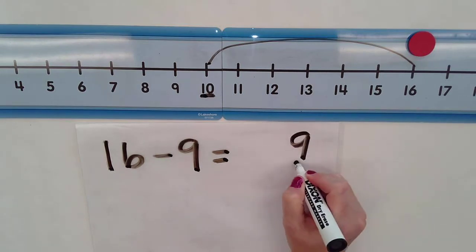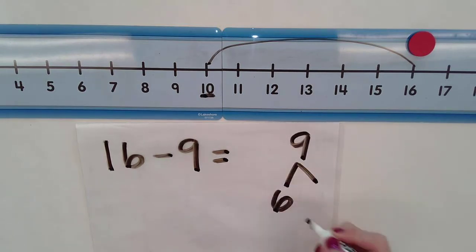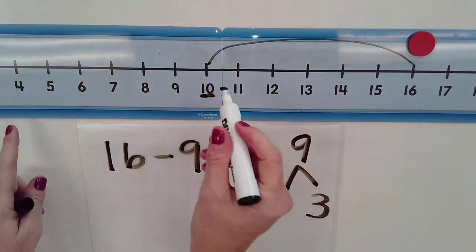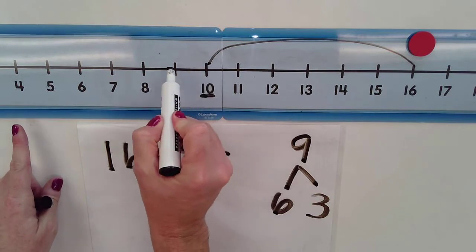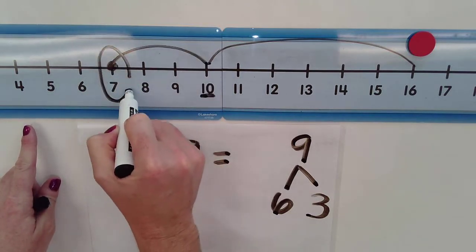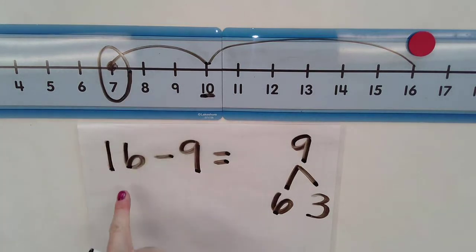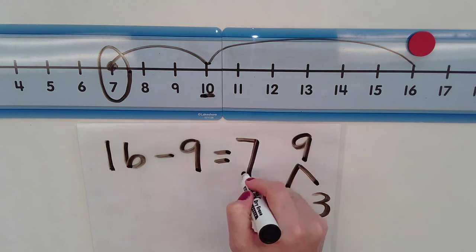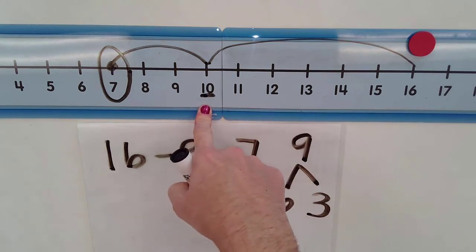I've made a jump of 6. Now, I know that I need to make a jump of 3 more in order to find my answer because 6 and 3 are number partners of 9. So if I know that 16 minus 9 can give me 7 because I use that friendly number of 10 to help me.